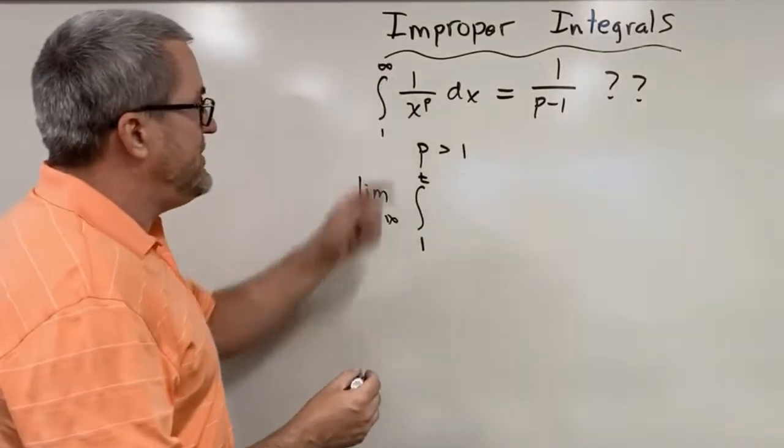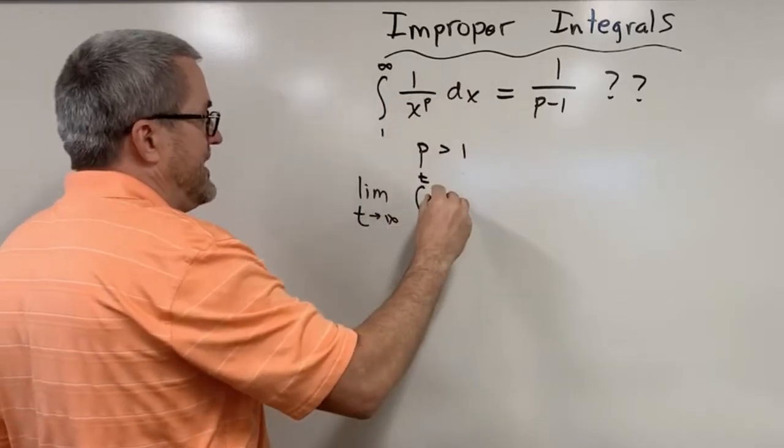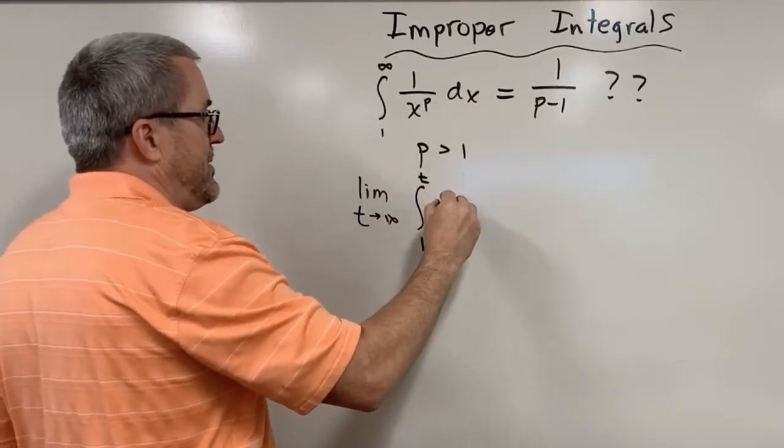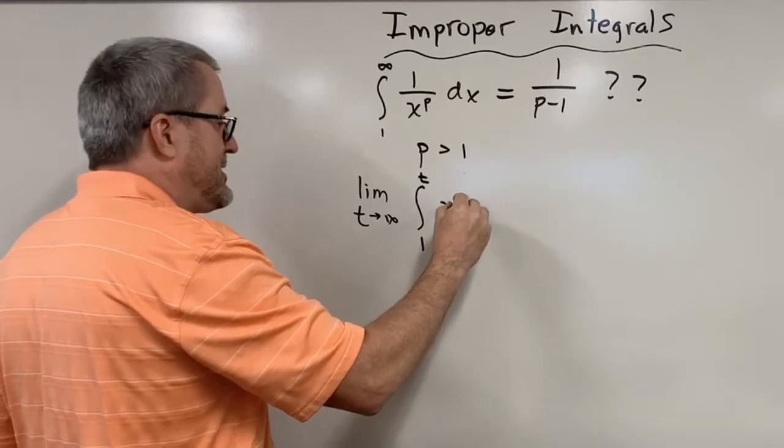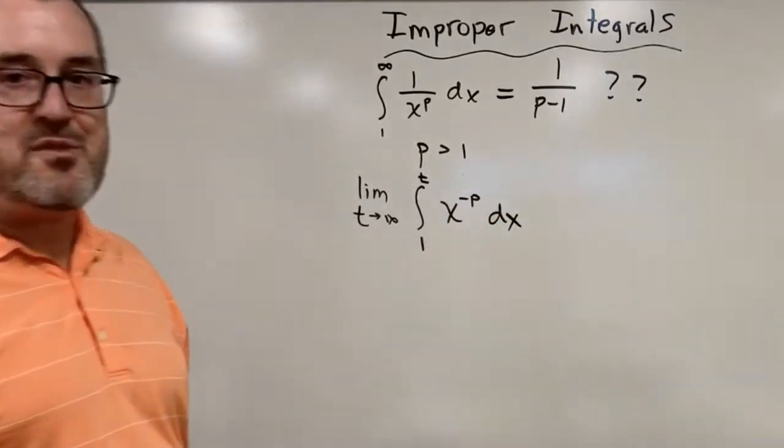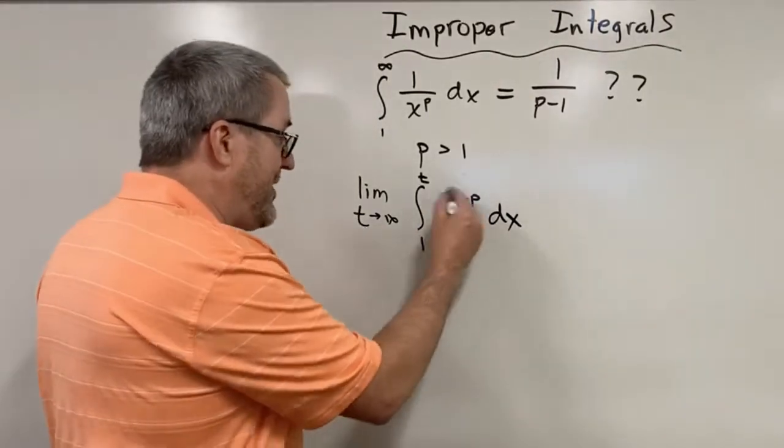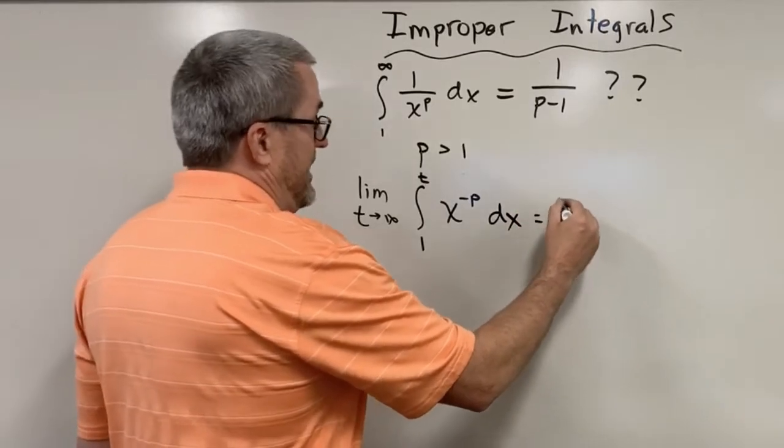And then the thing that you've seen in the previous video is this algebraic step of saying one over x to the p is the same as saying x to the negative p power. And the reason we make that move is it's just easier to make the integral, the antiderivative, work out when we think of it this way. Let's do that.